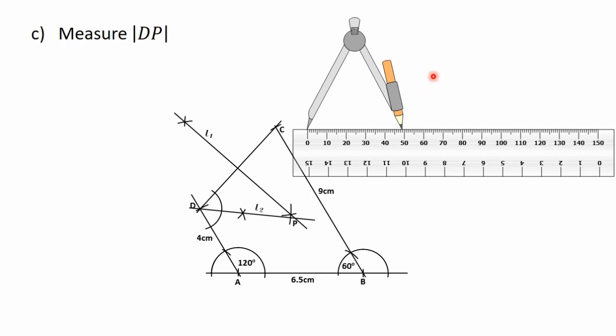The scale I'm using on my ruler is in millimeters, and 49 millimeters is equal to 4.9 centimeters. So the length of the line DP is 4.9 centimeters.